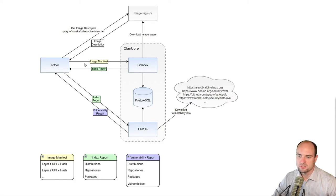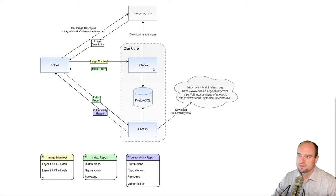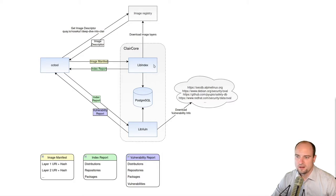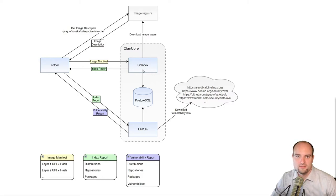Next, the ClairCore tool will send the image manifest as an index request to libindex. libindex will read the location of individual image layers from the manifest and download all those layers from the image registry. After that, libindex will perform the image scanning. The goal of the image scanning is to find out what kind of content is stored in the image — what distribution, what repositories, and what packages are installed. Note that libindex doesn't deal with vulnerability information at all; its only task is to discover the existing content on the image. The result of image indexing is an index report, which is sent back to the client.